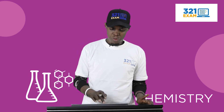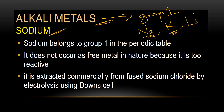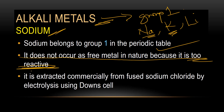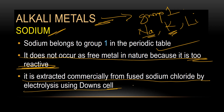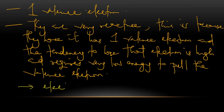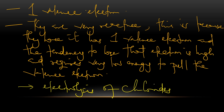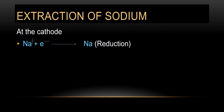The Group 1 element given to us was sodium. Sodium belongs to Group 1 in the periodic table. It does not occur as a free metal because it is too reactive. It is extracted commercially from sodium chloride by electrolysis of Down cells. Now sodium and potassium, their mode of extraction is through electrolysis of chloride or hydroxide.